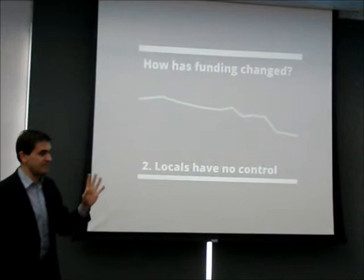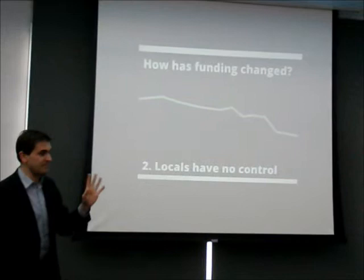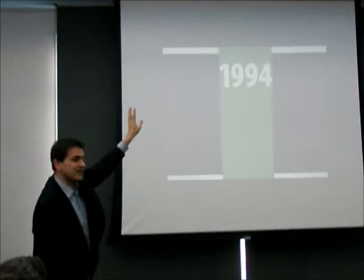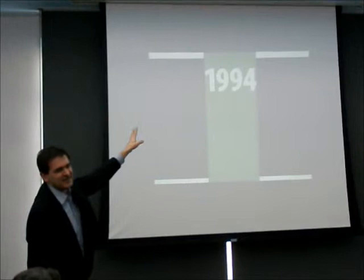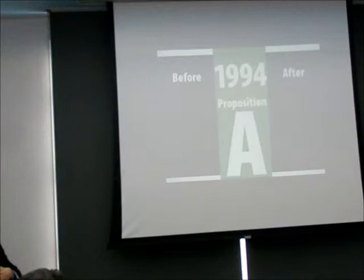Now I want to talk about the method by which things have changed — this is where heads explode. I want to start with 1994, the watershed year for shaping Michigan education funding. It's one of the biggest years in any state's education funding history in terms of the amount of change to the formula, because 1994 was the year of Proposition A.